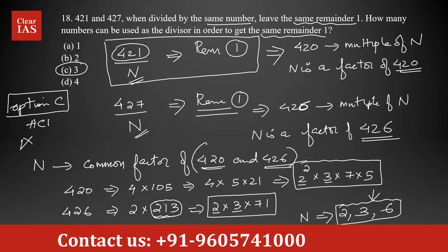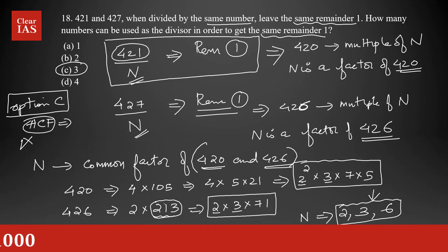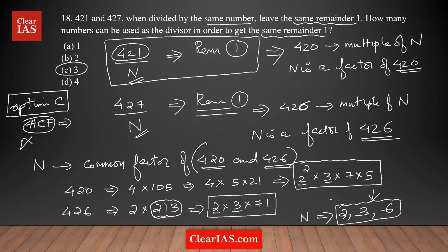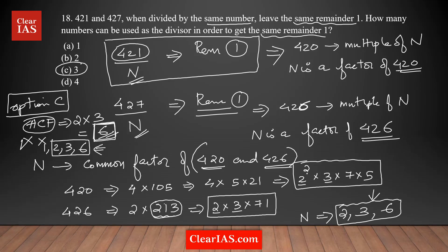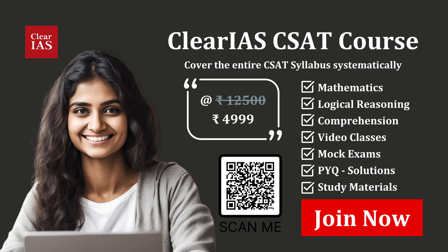Another approach: calculate the HCF. The highest common factor takes the common factors to the highest power — 2 times 3 equals 6. But since the question asks how many numbers are possible, you look for all common factors, not just the highest. So find the factors of the HCF, which is 6: its factors are 1, 2, 3, and 6. Excluding 1, the answer is 2, 3, and 6 — three values. Either approach works.